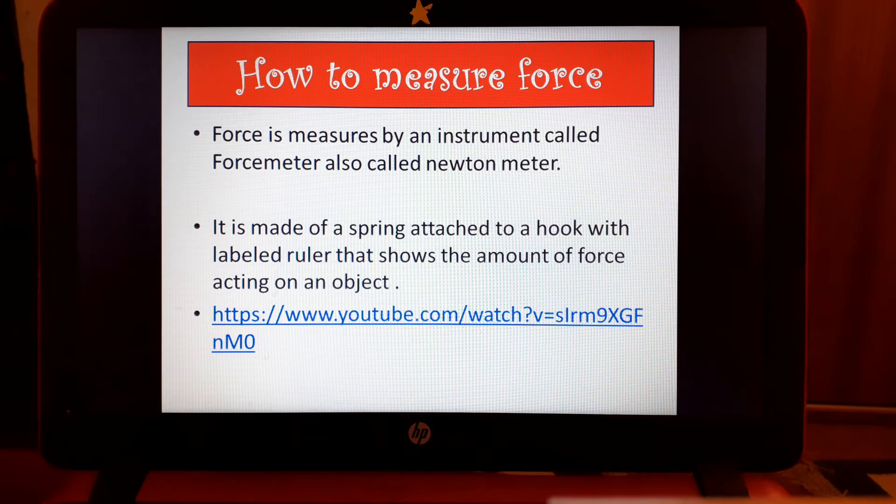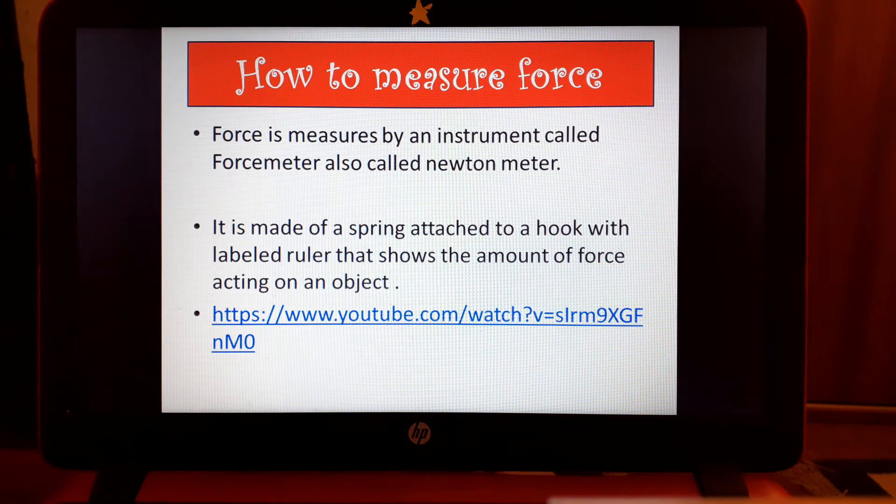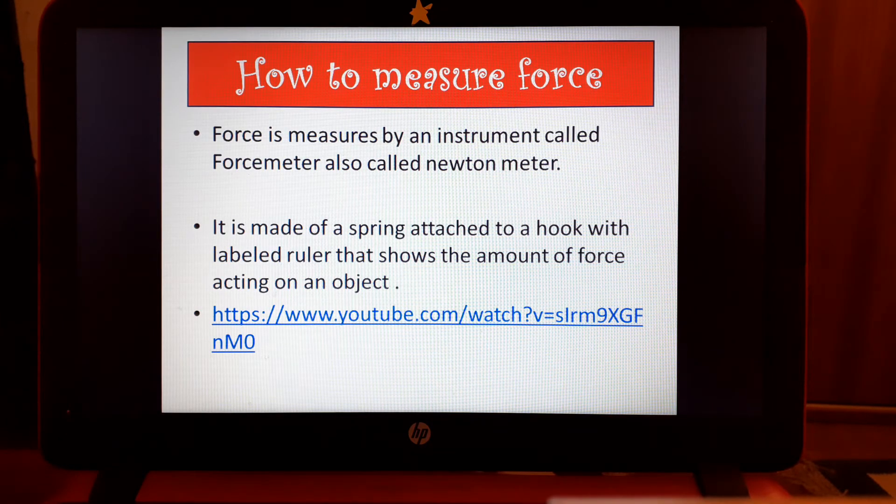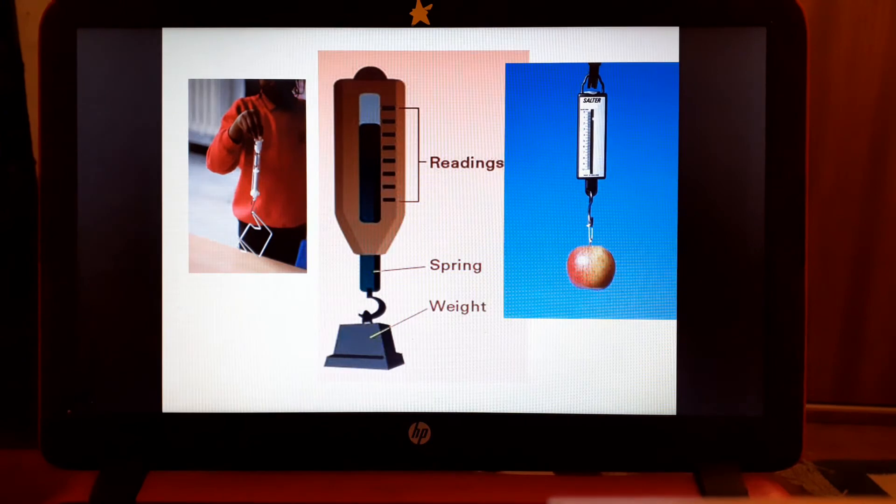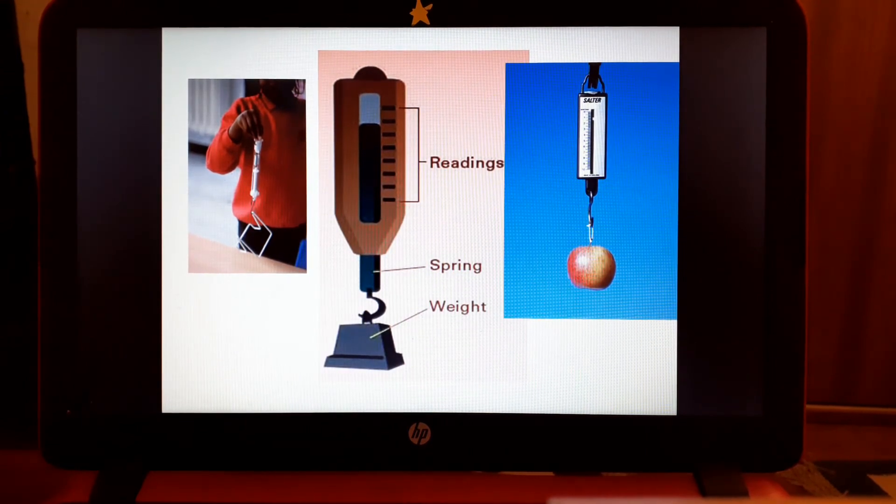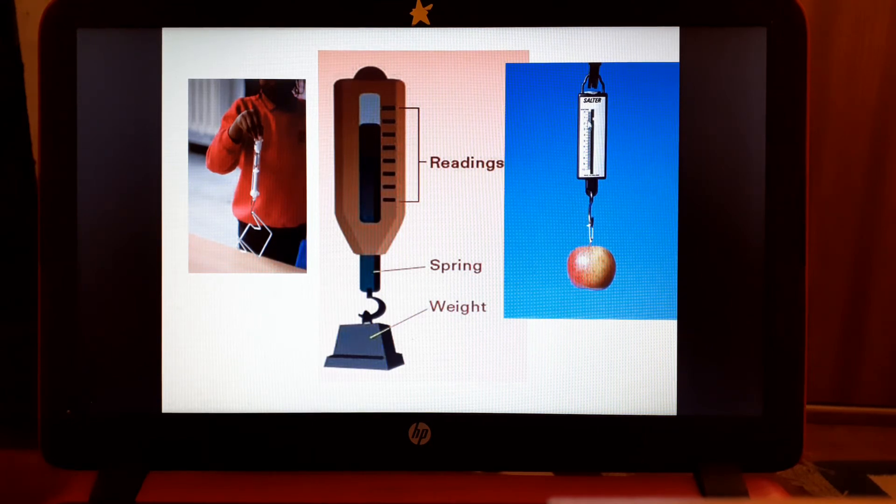This spring is attached to a hook and you have a marker next to the spring that shows a number. When that spring is stretched down to a certain value, that value represents the force acting on an object. If we were at school we would go to the lab and show you the force meter. This is how it looks like, it's like a hanger with numbers. If you hang an object here, the numbers would show you the force acting on the object. There's a limit to the force.